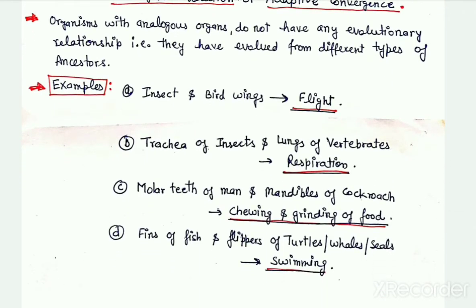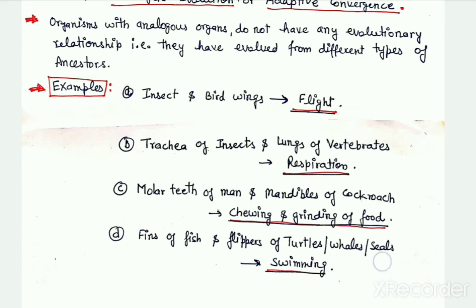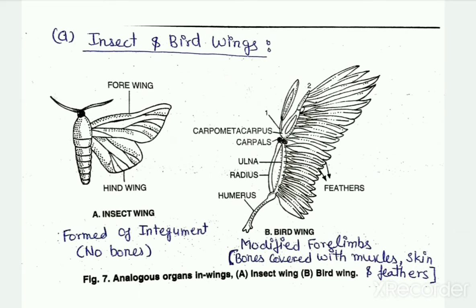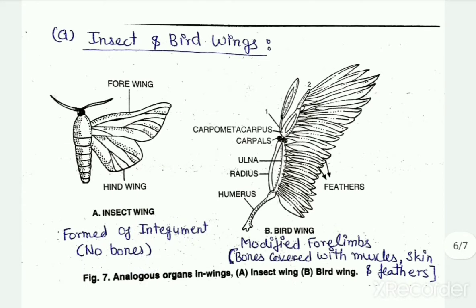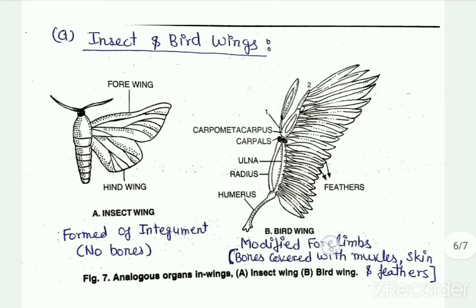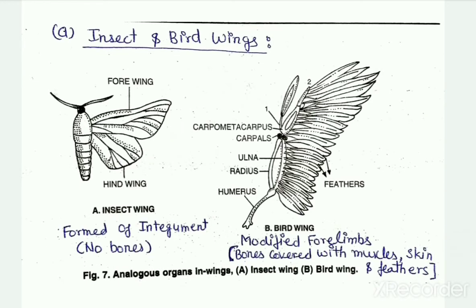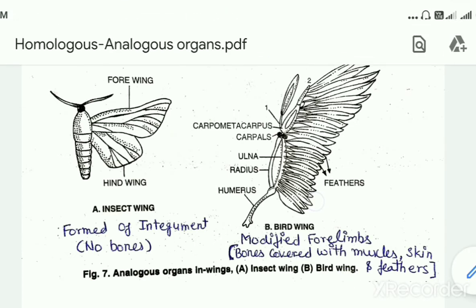There are many examples of analogous organs. One example is the wings of insects and the wings of birds — both are adapted for flying and help in flight. But if we see their basic structure, insects' wings are just folds of skin and do not have any bones. On the other hand, the wings of birds are modified forelimbs consisting of bones covered by muscle, skin, and feathers. So although the function is the same, the basic structure is different — hence these are called analogous organs.